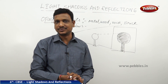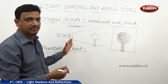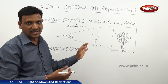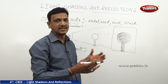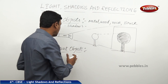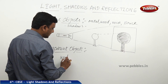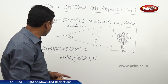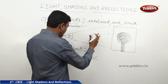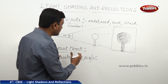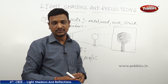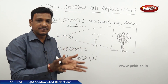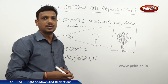Shadows are cast only by opaque objects. When an opaque object is kept in the path of light, it obstructs the light, so light does not fall on one particular area — that area is the shadow. If instead you keep a transparent object like water, glass, or acrylic, the light passes through it and no shadow is formed, because the transparent object does not obstruct the light.